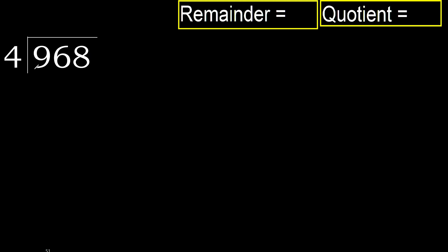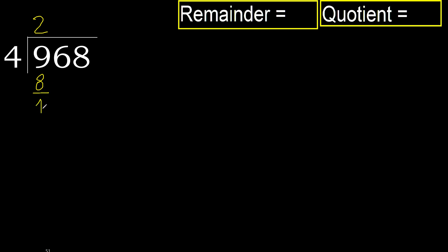968 divided by 4. 9 is not less, therefore start with 9. 4 multiplied by which number is nearest to 9 but not greater? 4 multiplied by 3 is 12, which is greater. Multiply by 2 is 8, which is not greater, ok. Subtract: 9 minus 8 is 1.